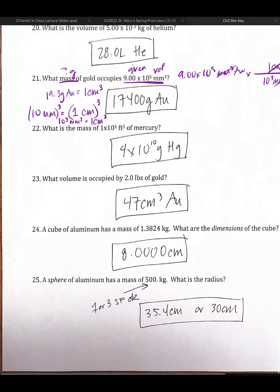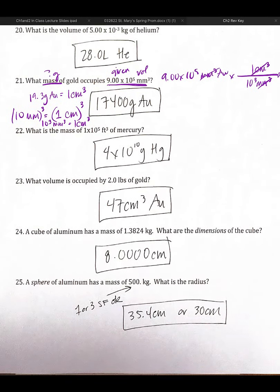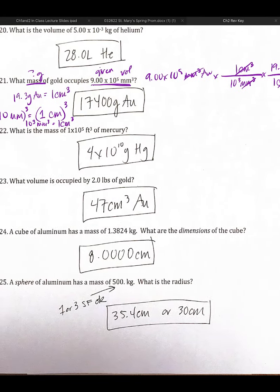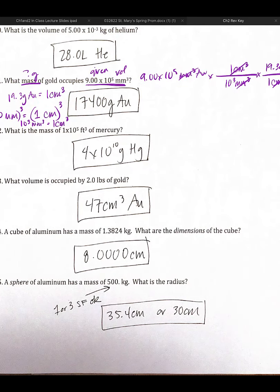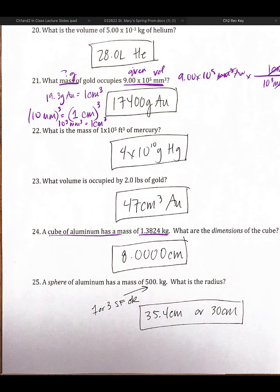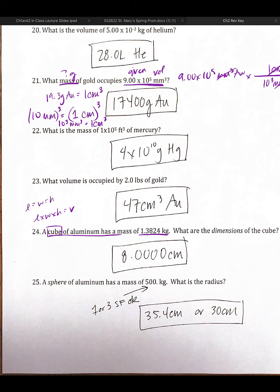Likewise, if we go down a little bit further and we get some of these questions down here. For example, it says a cube of aluminum has a mass of this, and what are the dimensions? Then we'd have to think back to ourselves, what is the significance of the word cube? Typically, length times width times height is equal to volume. But if it's a cube, length equals width equals height. Therefore, length cubed is equal to volume for a cube.